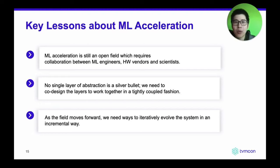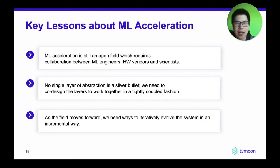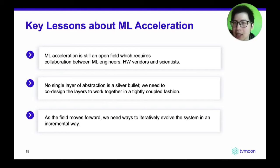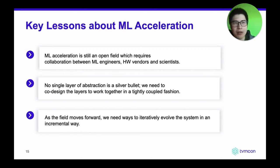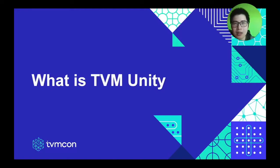Over the past few years, we have learned several key lessons that capture these pain points and guide where the future should go. Machine learning exploration today is very hard because it prevents collaboration between multiple organizations and parties that sit at different layers of abstraction. We also learned that no single layer of abstraction is a silver bullet — we need to co-design each layer together in a tightly coupled fashion to enable the next generation of innovation. As the field moves forward, the sweet spot may shift between library-driven and compilation-driven approaches, so we need to iteratively evolve the system.